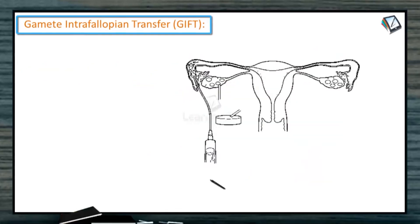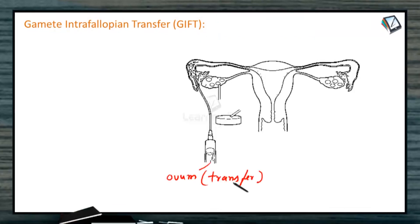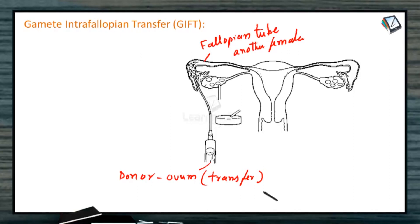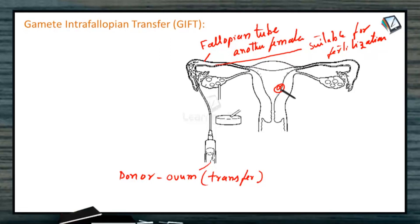Next is GIFT, also called gamete intrafallopian transfer. In this procedure, an ovum collected from a donor is transferred into the fallopian tube of another female who cannot produce eggs but can provide a suitable environment for fertilization and for further development, including implantation in the uterus. Generally, the problem here is with the female who has failed to produce the ovum. The donor ovum is also mixed with the sperms of the husband or a donor during insertion.